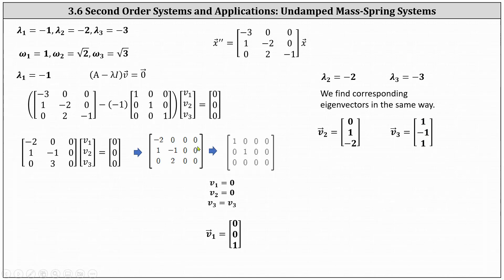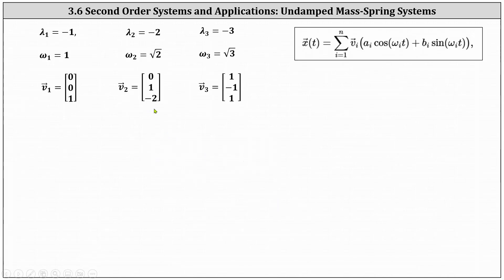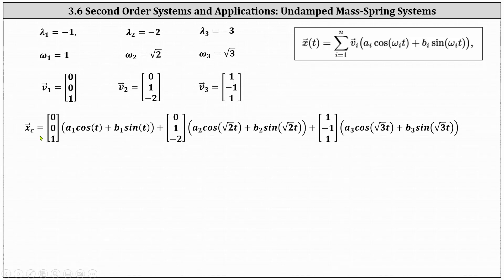Now we have all information needed to determine the general solution to the associated homogeneous system. Because all eigenvalues are negative, the complementary solution x sub c equals eigenvector v one times (a one cosine t plus b one sine t), plus eigenvector v two times (a two cosine square root two t plus b two sine square root two t), plus eigenvector v three — the vector one, negative one, one — times (a three cosine square root three t plus b three sine square root three t).